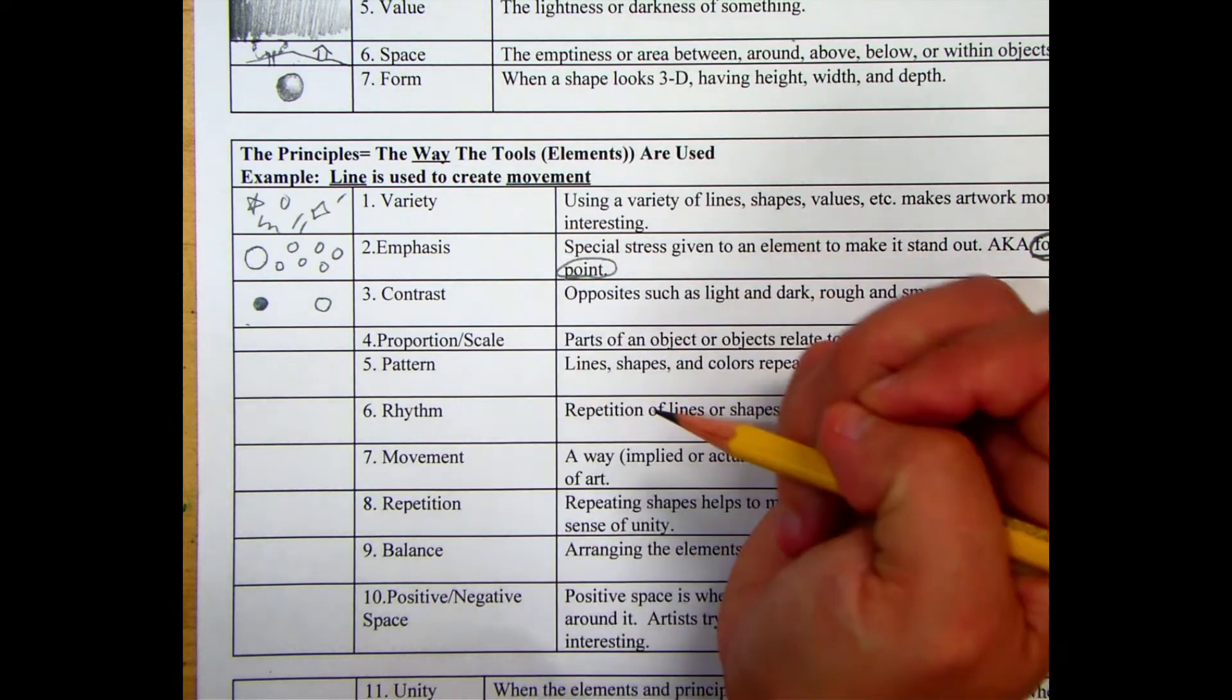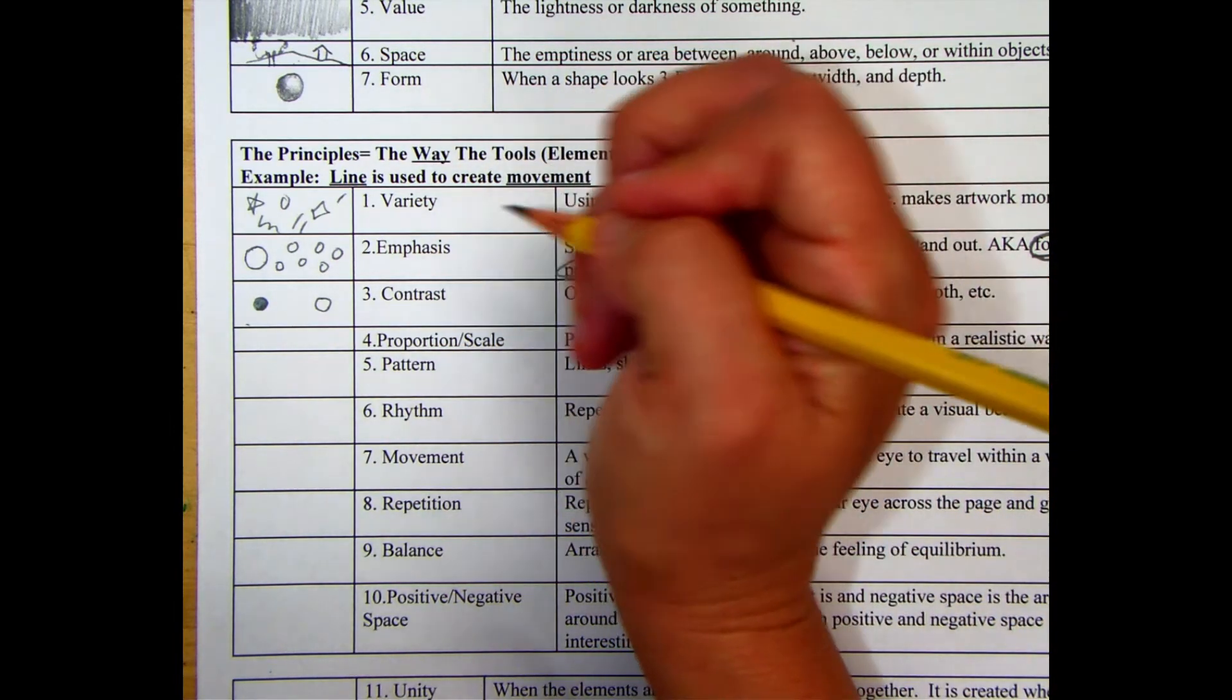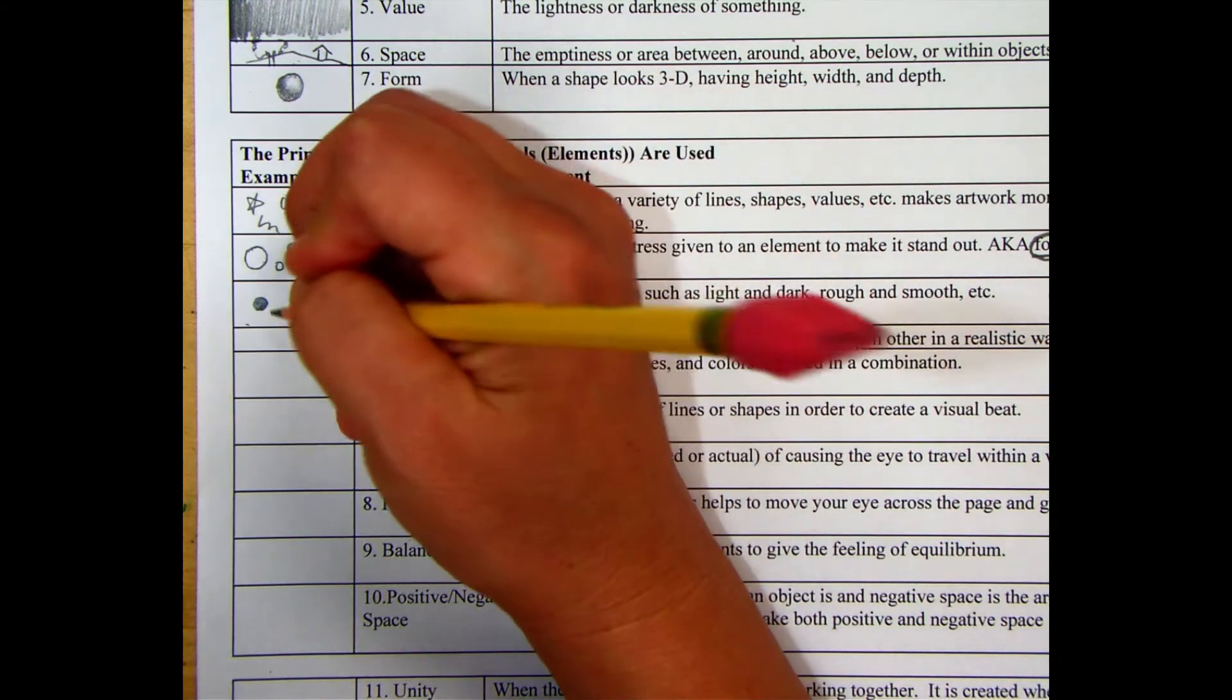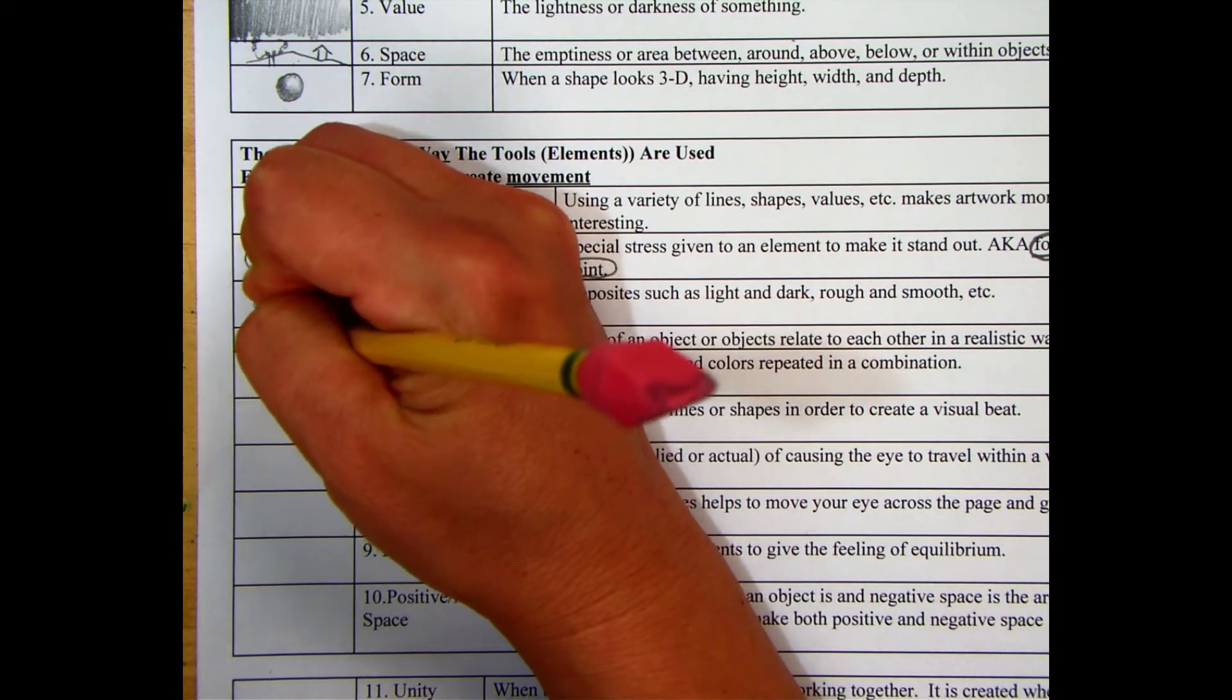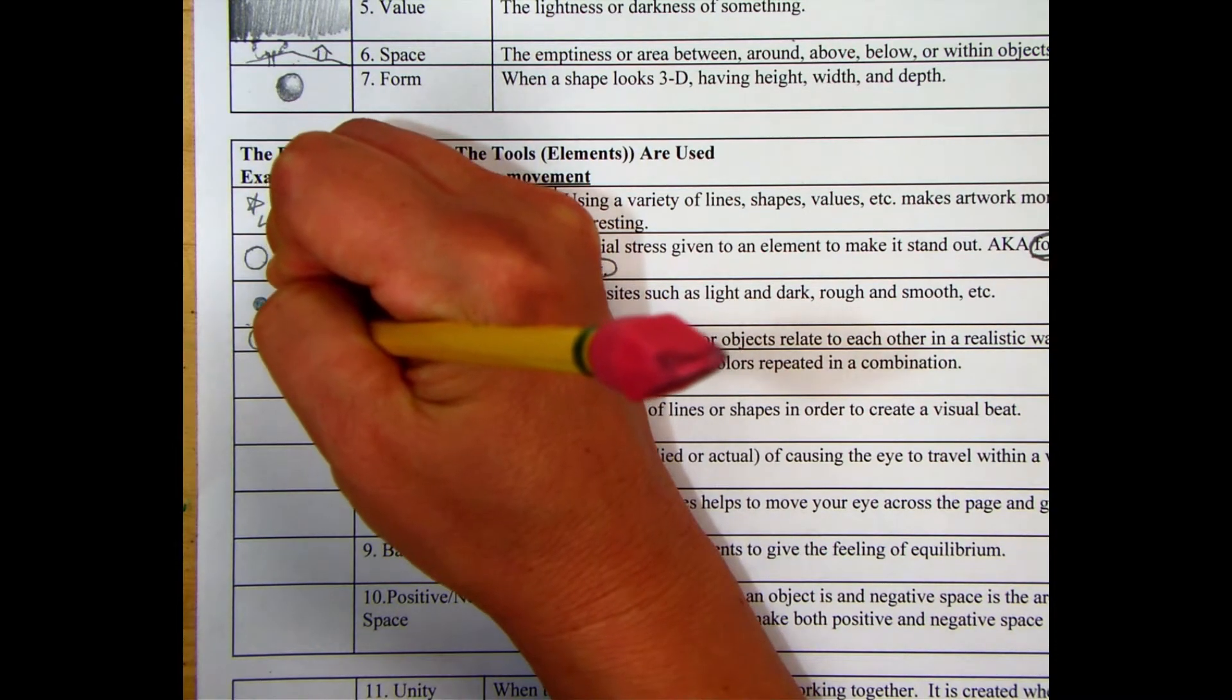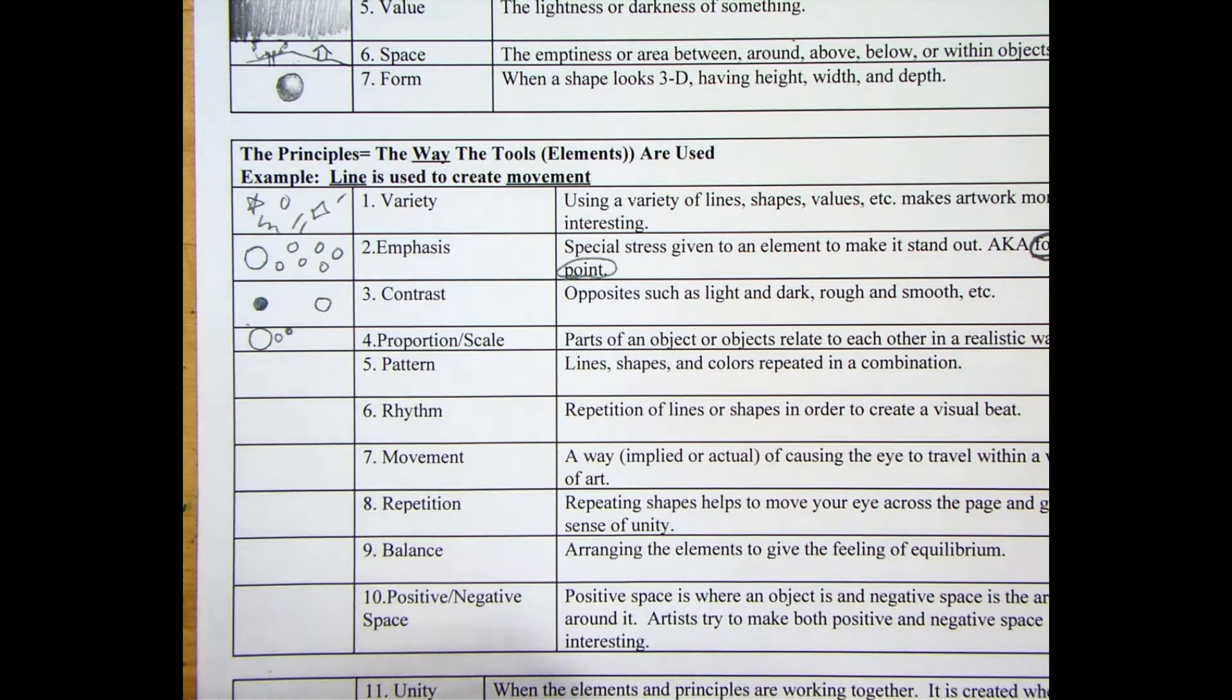Then we have proportion and scale. So you can make things in proportion, you can make them out of proportion. So you have something that's big and then maybe you play with scale to make it look like it's a little bit farther away, it gets smaller as it goes back.